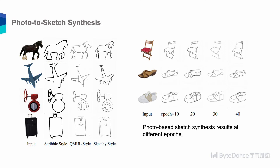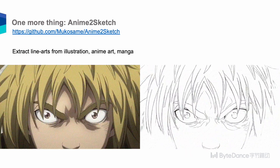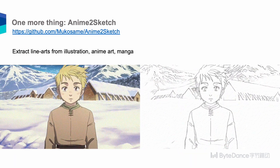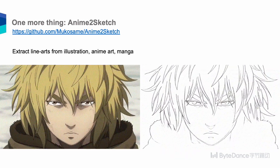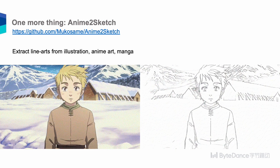As a by-product, our network can also provide high-quality freehand sketches for a given photo, as shown in the left figure. The right figure shows photo-based sketch synthesis results varied across different epochs. The changing sketches increase sketch diversity, further augmenting the data and improving the generator's generalization capability. Our sketch extractor also has an interesting application called Anime2Sketch, which extracts line arts from illustrations, anime art, and manga. Feel free to check our GitHub for more details.